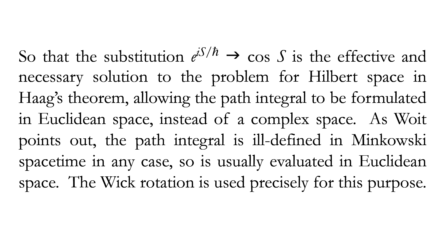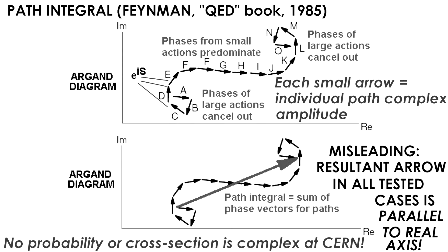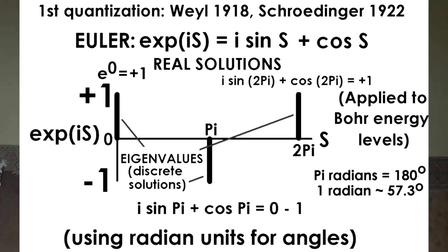The complex exponent actually goes back to Euler, who showed that exp(is) equals i·sin(s) plus cos(s). So you have two terms: a complex term, i·sin(s), and a real term, cos(s). Cos(s) is obviously a simple wave as a function of s — it varies between plus and minus 1. So it's interesting that if you were to drop the complex term, you could get a very simple wave oscillation to explain what's actually going on in some of these situations.